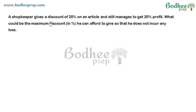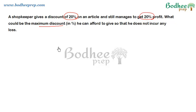In this question, there is a shopkeeper who gives a discount of 20% on an article and still manages to get 20% profit. We need to find the maximum discount he can offer so that he does not incur any losses. We'll define cost price, selling price, and mark price. Discount is calculated on mark price and profit is calculated on cost price.